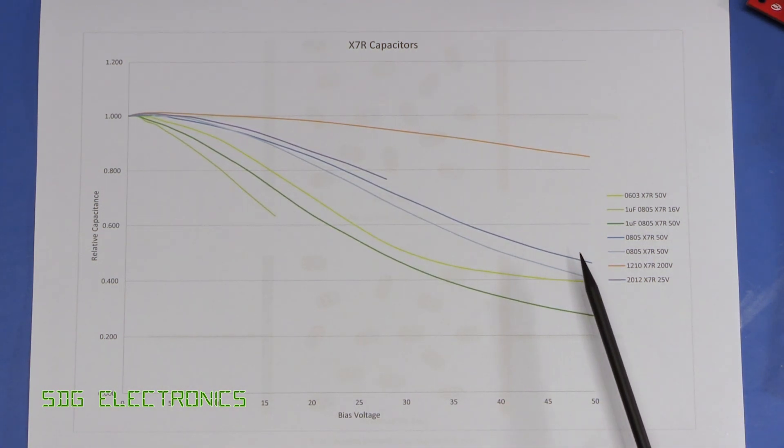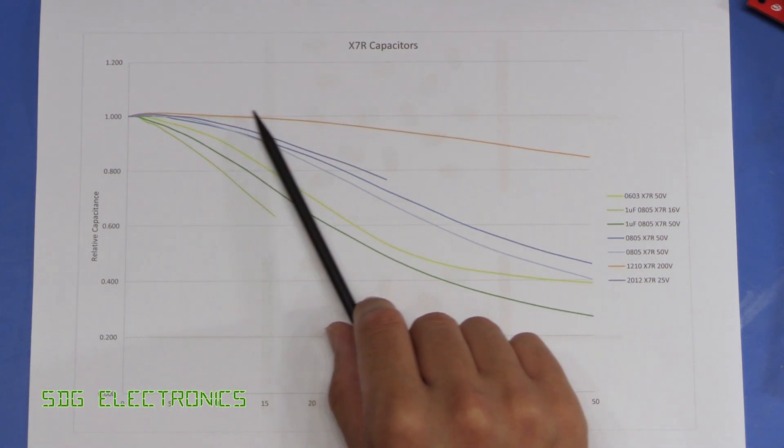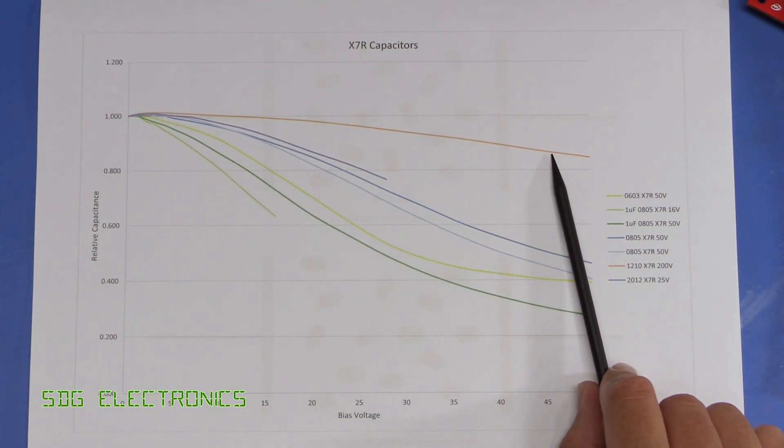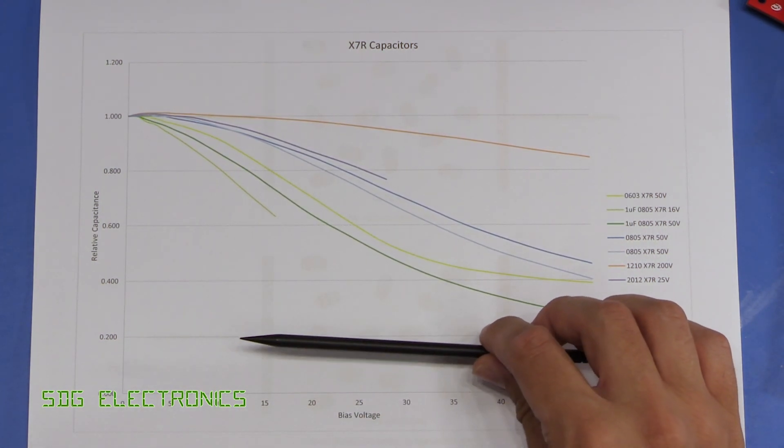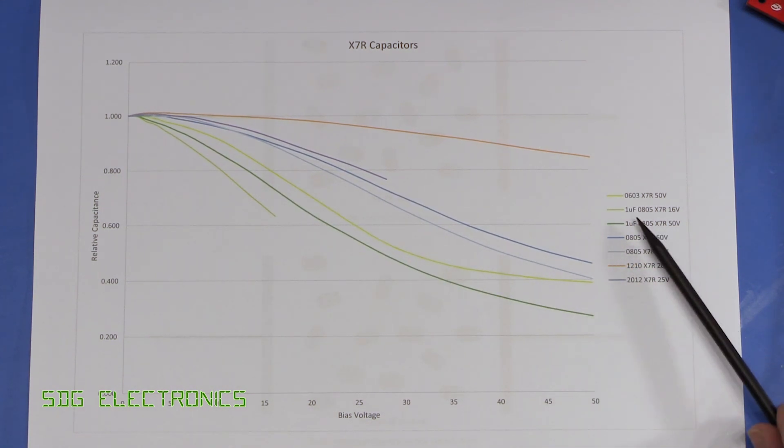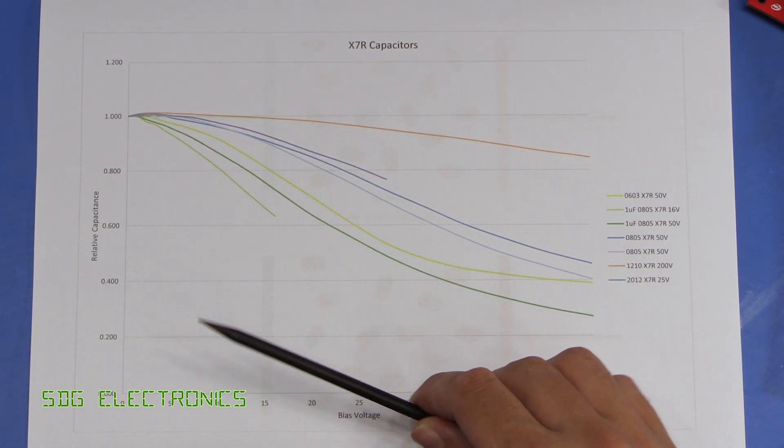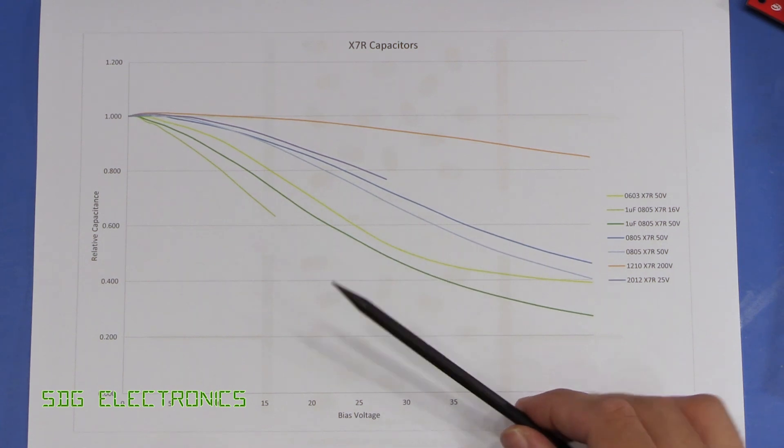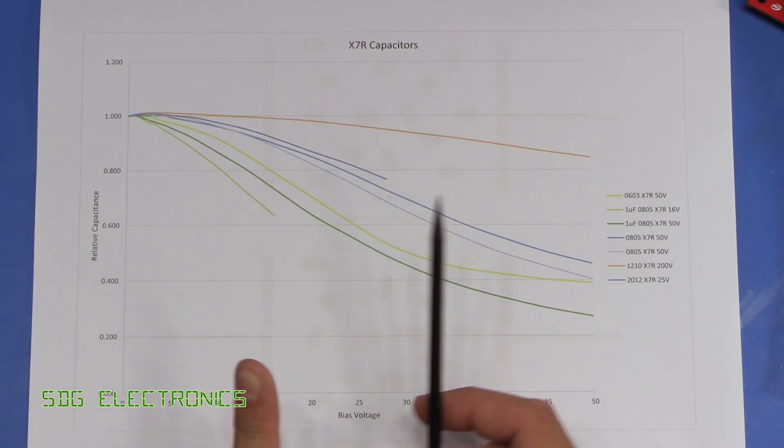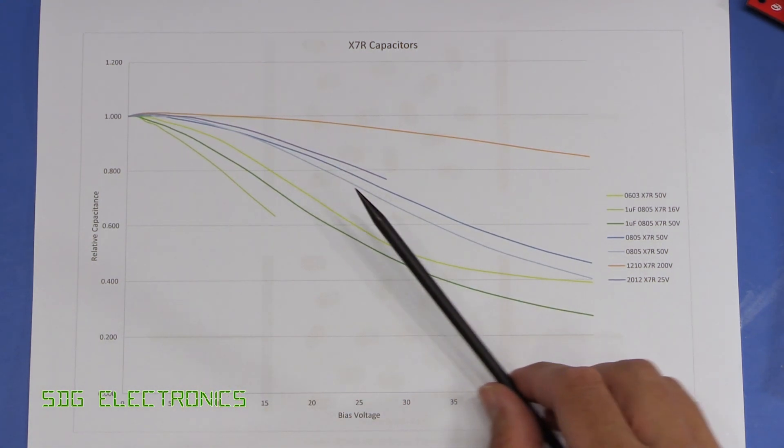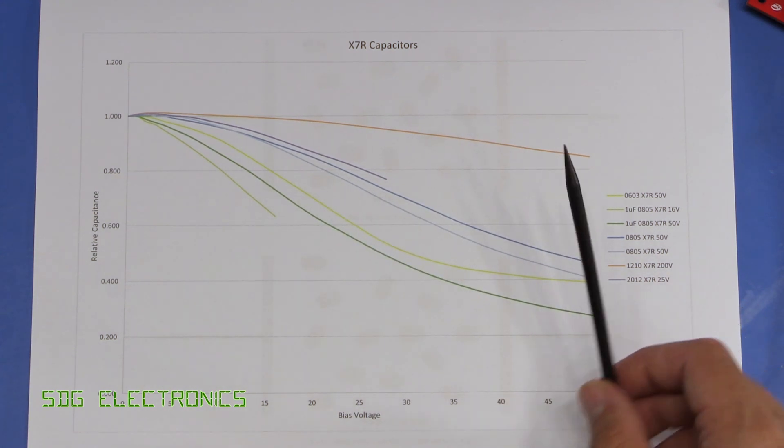So first of all, for the high voltage capacitors like this 200 volt capacitor here, the dielectric material is much thicker than on the low voltage capacitors. So what we actually see is that the electric field between the two plates is lower because there's a greater distance, and therefore less dipoles are affected when the bias voltage increases.